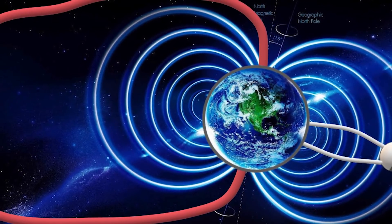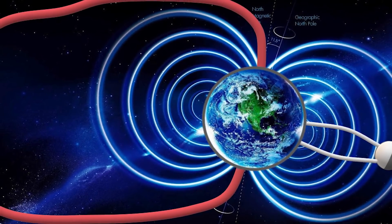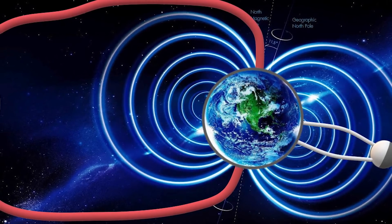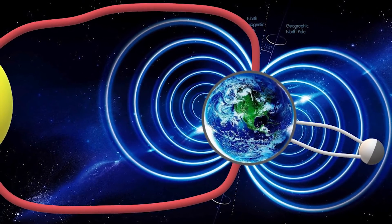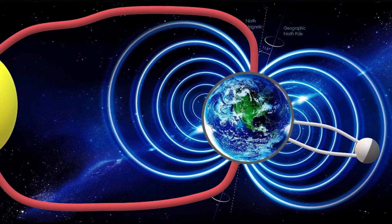This solar current, also known as the Birkeland current, is a cord-like electromagnetic funnel that connects the sun with each planet. It goes through the planet and possibly connects back to the sun.